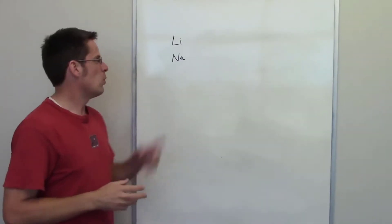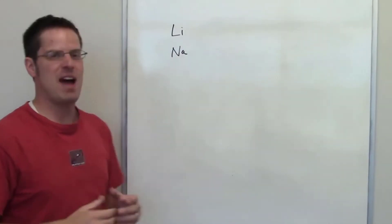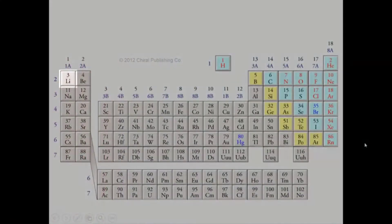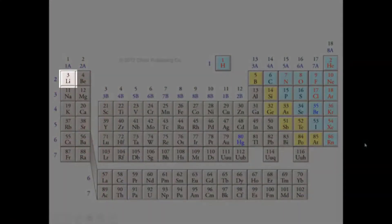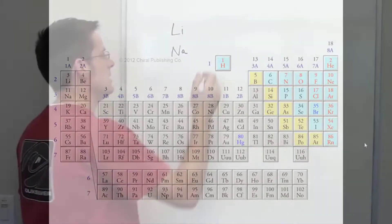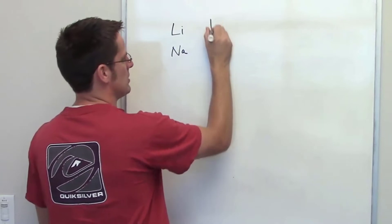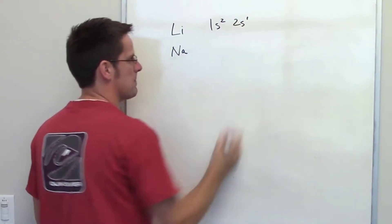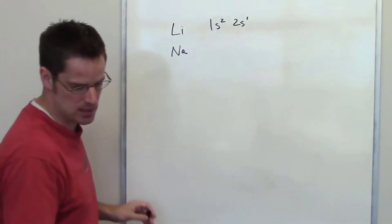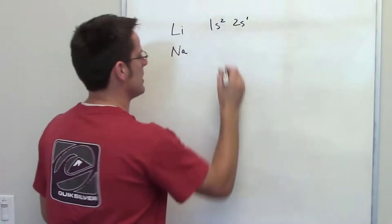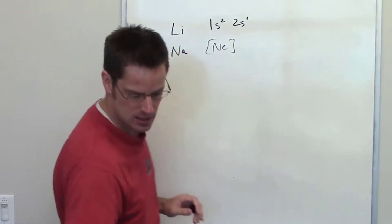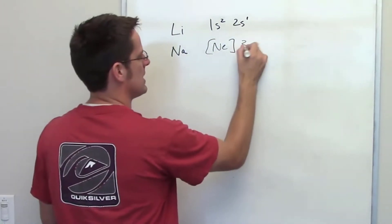In this question we're asked why does lithium have a higher first ionization energy than sodium? If you look at the periodic table, lithium is in box number three — it has an atomic number of three — which means its electron configuration is 1s2, 2s1. By comparison, sodium has an electron configuration, in a neutral state at least, of neon followed by 3s1.